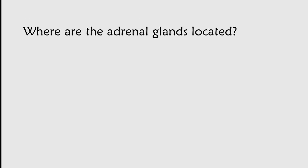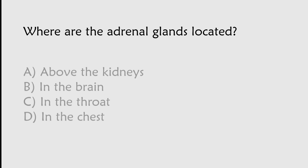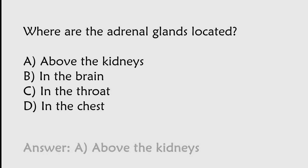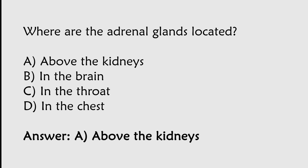Where are the adrenal glands located? Options: Above the kidneys, In the brain, In the throat, In the chest. The correct answer is Option A. The adrenal glands are located above the kidneys.